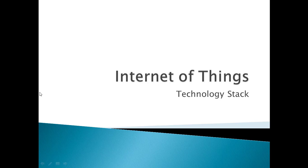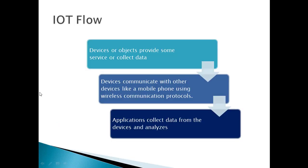This is a video on the technology stack behind the Internet of Things. Fundamentally in the IoT ecosystem there is the following flow of events. First, there are devices or objects which are providing some service, sending data, or being controlled in some way.